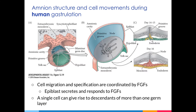The primitive streak extends anteriorly and eventually a thickening forms at its anterior end, known as the node, which gives rise to the notochord. The movements of gastrulation appear to be coordinated by fibroblast growth factors, or FGFs, secreted by epiblast cells of the primitive streak. FGFs promote the migration of endomesoderm cells — cells that can give rise to either endoderm or mesoderm — through chemorepulsion, causing them to migrate away from the primitive streak. In mice, if FGF-8 or its receptor are knocked out, the endomesoderm cells fail to migrate. FGFs also regulate transcription factors including Brachyury, involved in mesoderm specification, and Snail, which promotes cell migration.